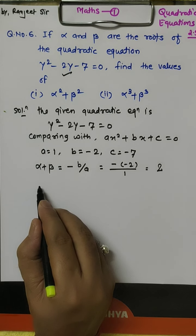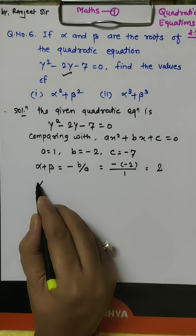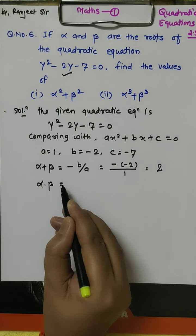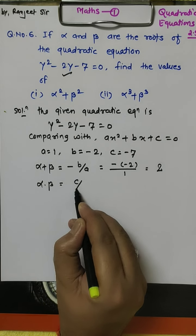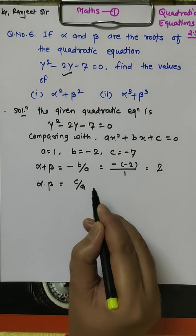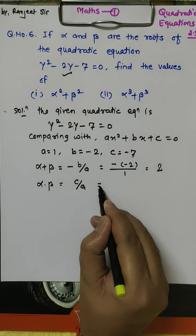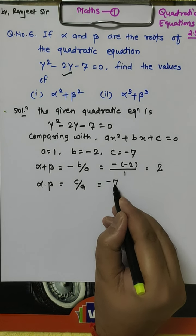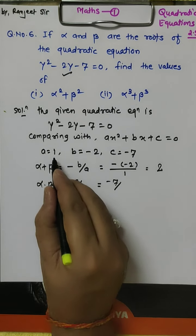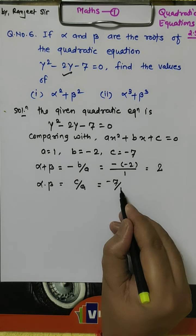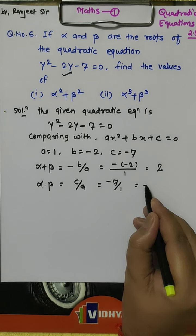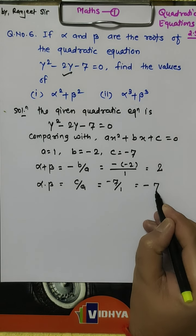Now find alpha into beta. Alpha into beta is equal to c by a. c is minus 7 and a is 1, so minus 7 upon 1 is minus 7.